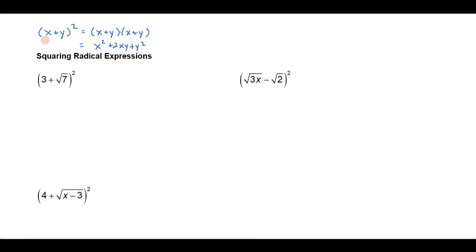When I do that I'll get x² + 2xy + y². Now when squaring binomials, we do this so often that we want to be able to go from the expanded form right to the result. Notice that when I square a binomial, I get the first term squared, then the middle term is 2 times the first term times the second term — that's 2xy — and then the last term is y².